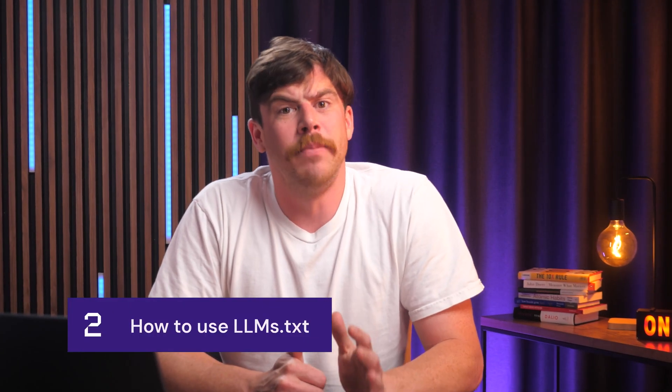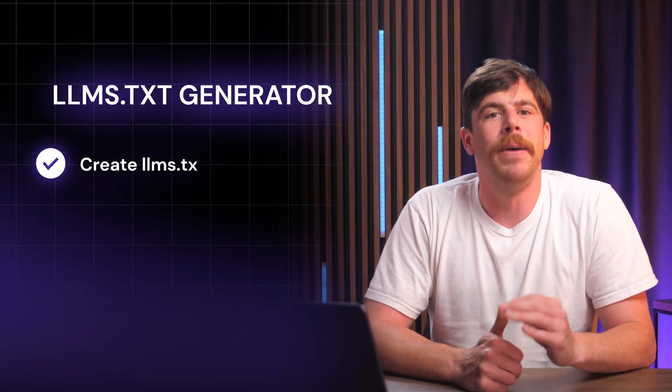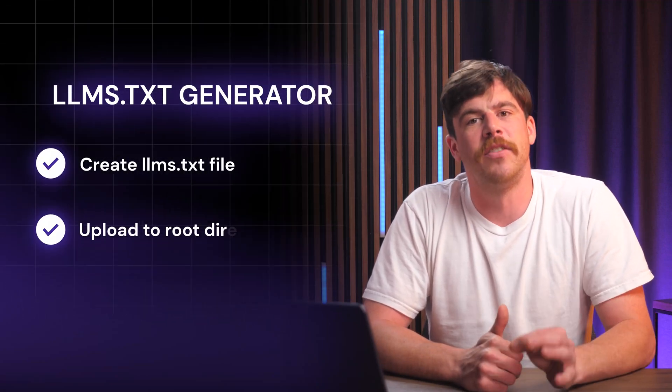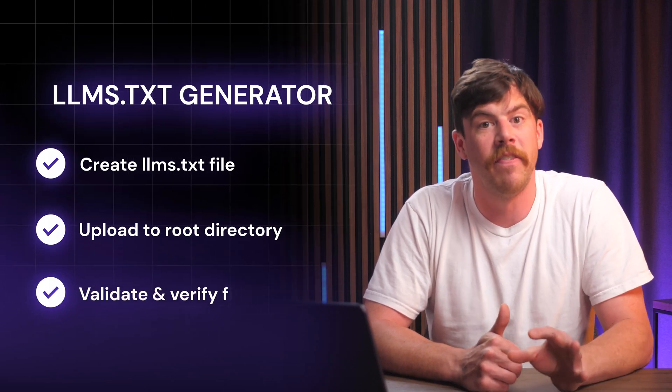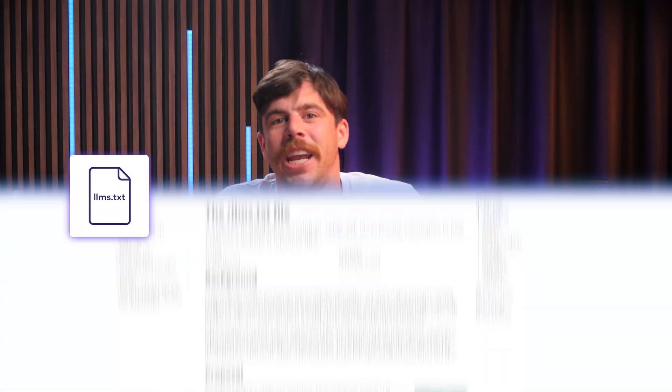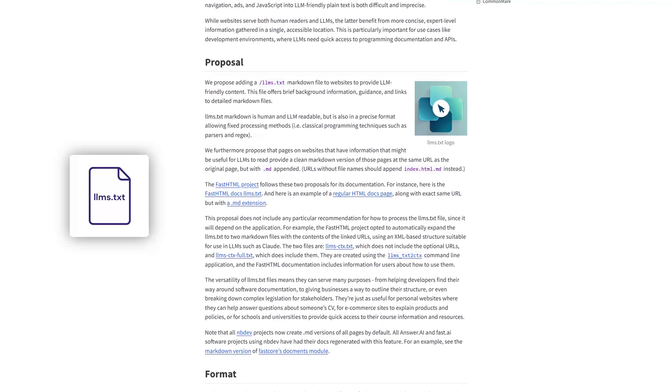Now that you have a better idea of what LLMs.txt is for, you're probably wondering how you're supposed to use it. It's a lot simpler than you would think. Using an LLMs.txt generator, you create the text file based on the URL of your site and upload that text file to the root directory of your website, making sure to validate the file and verify it is correct. As AI crawlers come across your site, they will find the LLMs.txt file in the root directory and use that as their source of key information for your site. Adding this text file doesn't change anything — it is just a piece of documentation made to optimize your site for future AI search advancements.